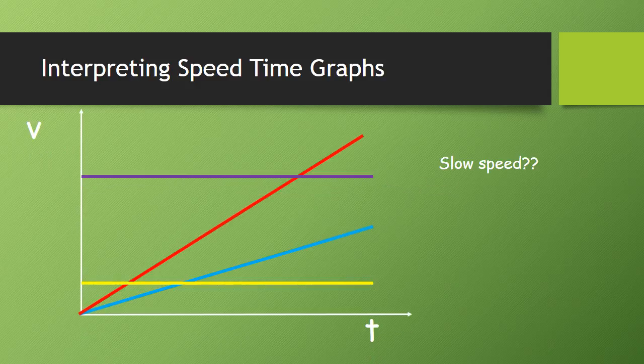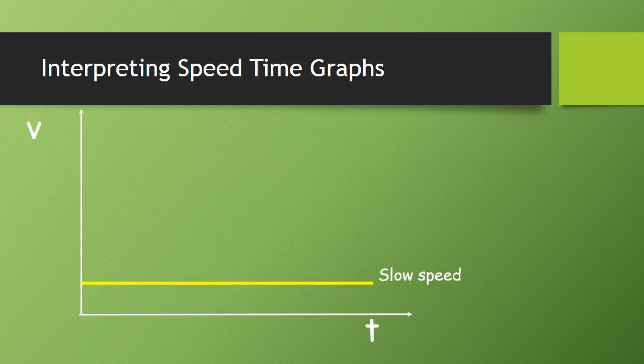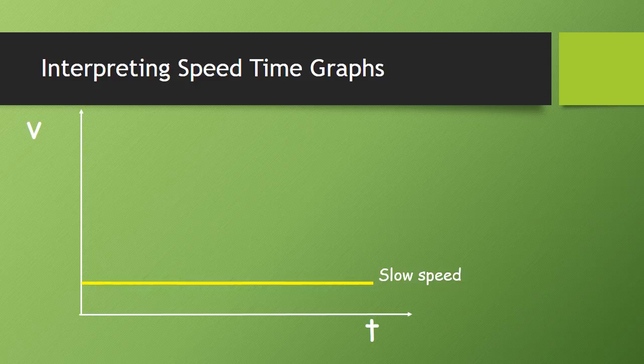The slow speed. The yellow line is the slow speed, because it's a lot closer to the zero point, so not such a big speed number.